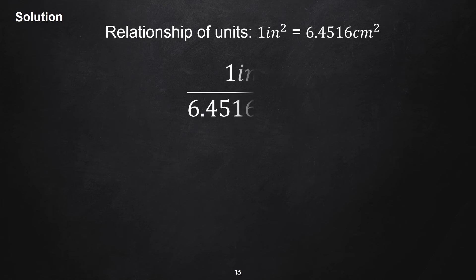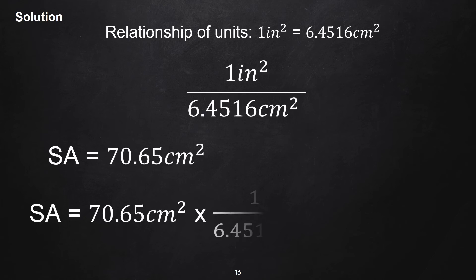This time, we are going to convert the surface area into inches squared. The area relationship between inches squared and cm squared is 1 in² equals 6.4516 cm². Determine the conversion factor to be used. So, the surface area in inches squared is 10.95 in².